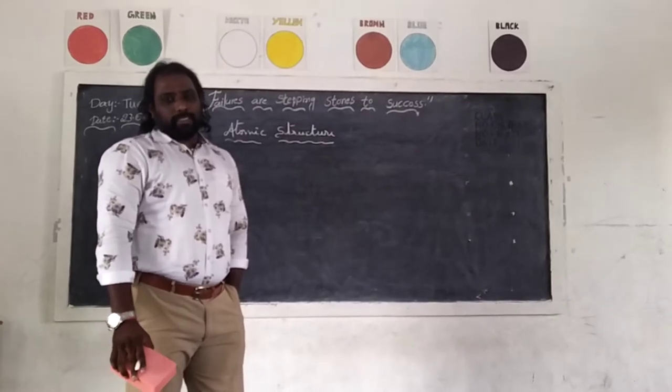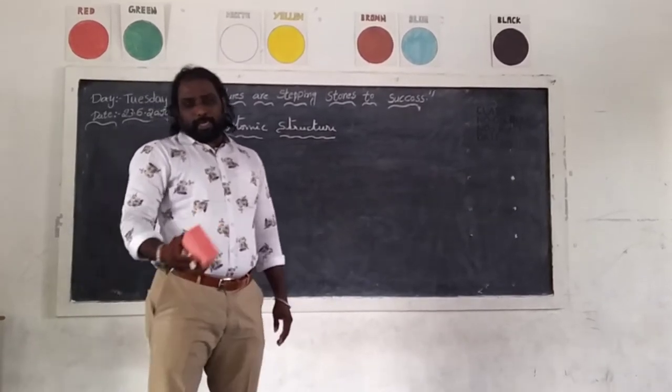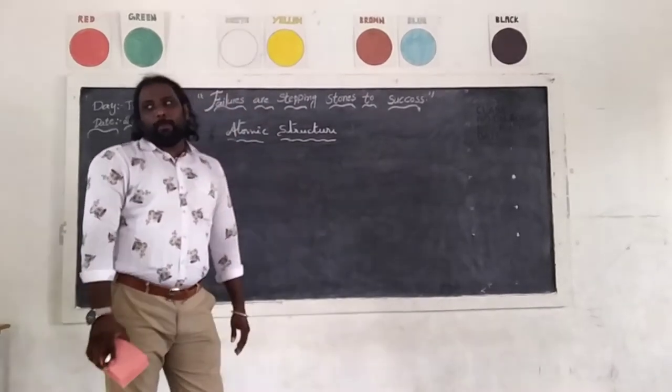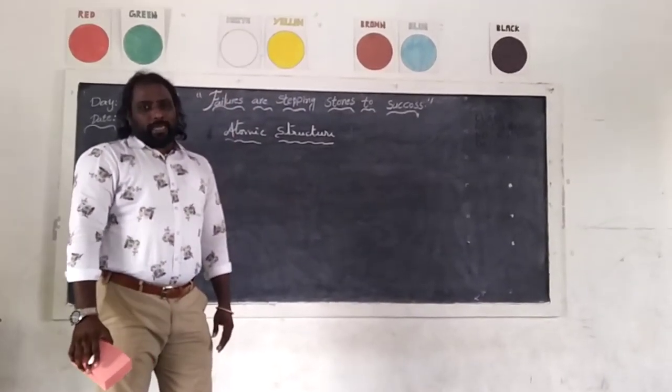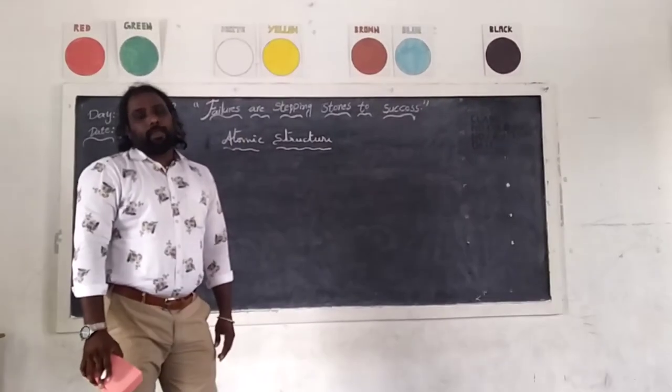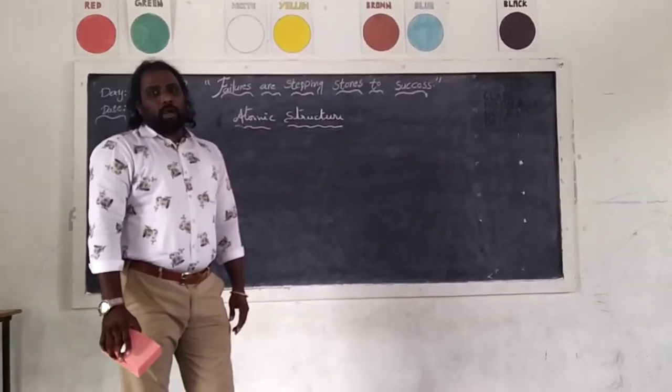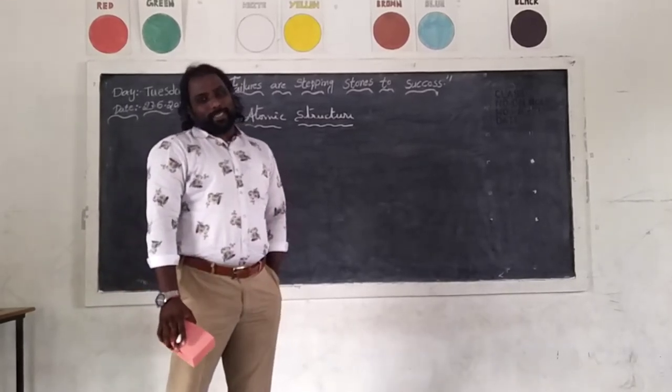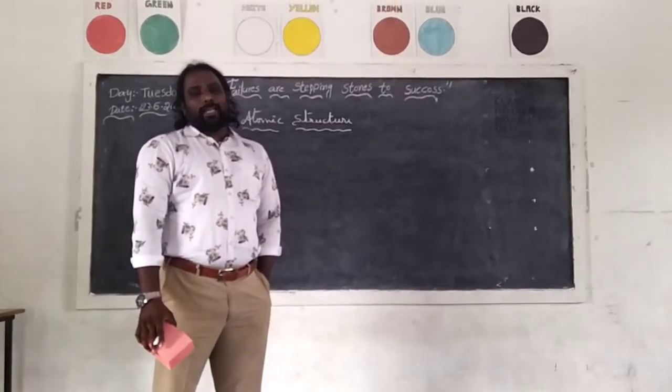Matter is nothing but we can say a human body, or any table, or any substance, any food that comes. Anyone will be made up of some tiny particles. The tiny particles is nothing but we can say atoms, according to John Dalton. He is a Greek famous scientist. He is a biologist also.